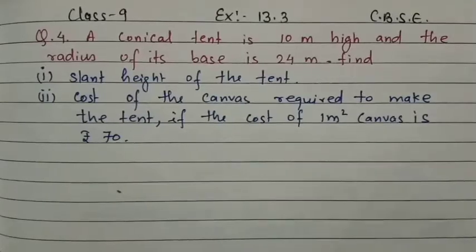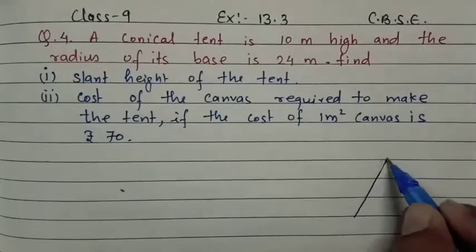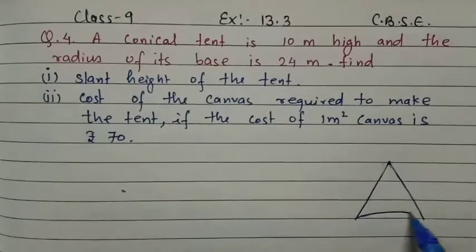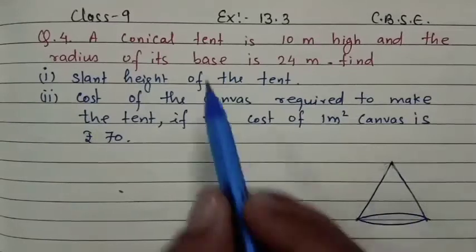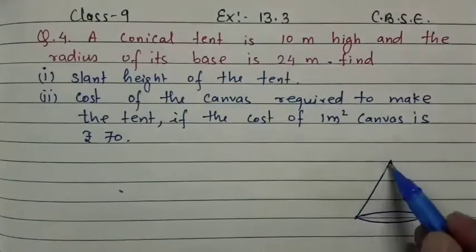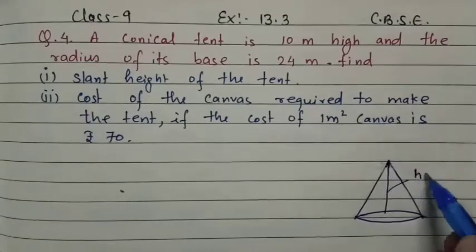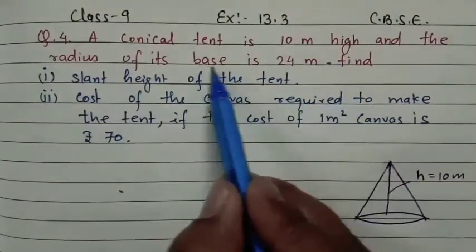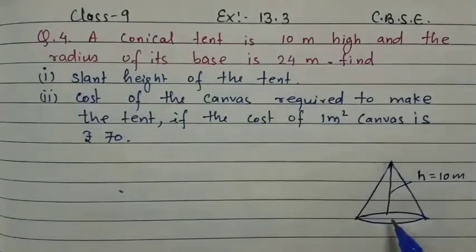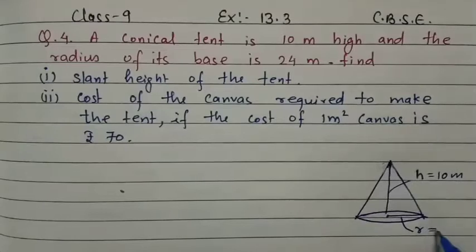Let us first consider this conical tent. The height from top to base is 10 meters, that is h = 10 meters. And the base radius is 24 meters. We are representing this in a diagram — the height is 10 meters and the base radius is 24 meters.